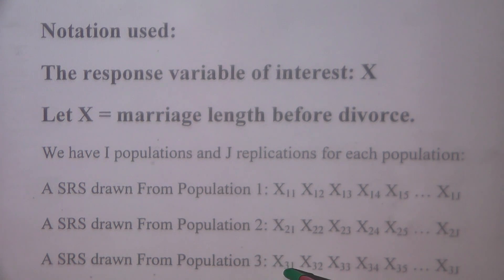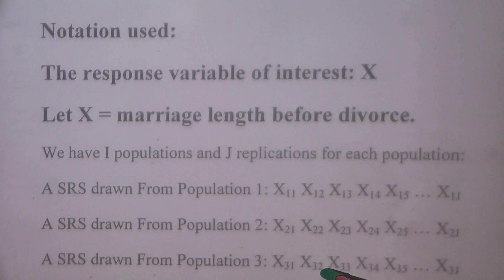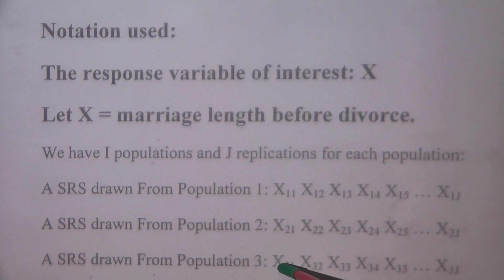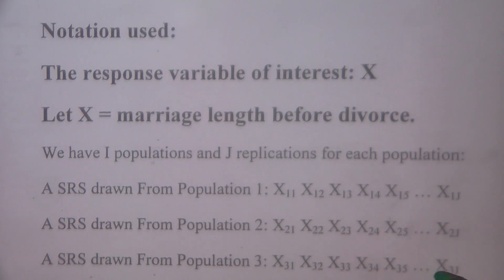To review the notation: x₃₁ is the first couple we observe — how long they last for their third marriage. For the simple random sample drawn from population three, we look at the first couple, how long they last for their third marriage; the second couple, how long they last for their third marriage; all the way up to the fifth couple, how long they last for their third marriage.